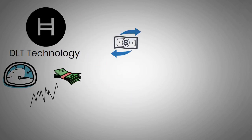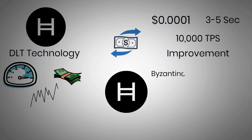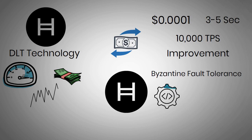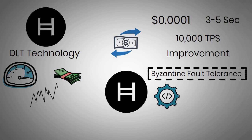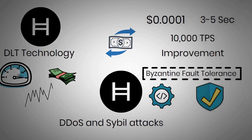Transactions in the Hedera network have a nominal fee of $0.0001 and reach finality in three to five seconds. Moreover, the network can handle up to 10,000 transactions per second, a considerable improvement compared to most popular blockchains. Hashgraph uses Asynchronous Byzantine Fault Tolerance, or ABFT, as its consensus algorithm. ABFT is considered one of the most secure algorithms and is resistant to DDoS and Sybil attacks, significantly improving network security.